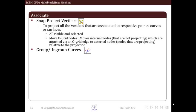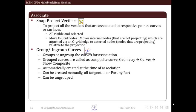The group ungroup curves option allows us to group curves into a composite curve or ungroup composite curves into separate curves. This is needed for associating an edge to a set of curves. These curves should first be grouped into composite curve and then edge can be associated to that composite curve. Composite curves can be displayed by right clicking on curves in display tree and selecting the option show composite.